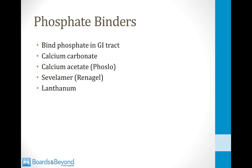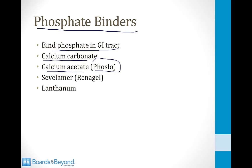To prevent these bone problems, nephrologists give patients phosphate binders that bind phosphate in the GI tract, lowering phosphate levels. These include calcium carbonate, calcium acetate (Foslo), sevelamer (Renagel), and lanthanum.